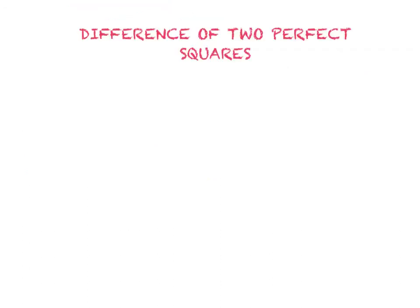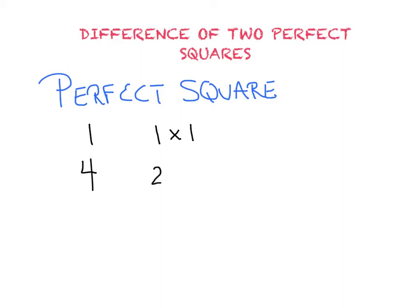Another type of factoring you should be familiar with is the difference of two perfect squares. So before I continue, we better just talk about what a perfect square is. Remember, a perfect square is any number times itself. For example, the first perfect square is 1. And now why is that a perfect square? Well, 1 times 1 is 1. The next perfect square is 4, because 2 times 2 is 4. The next perfect square would be 9, 3 times 3, and I could continue to go on. 16, because of 4 times 4, etc., and you can go down the list. Now, you should probably know the first 10 perfect squares.